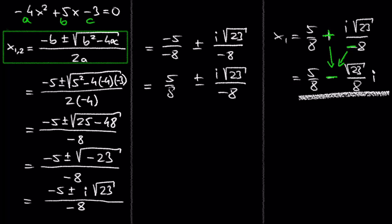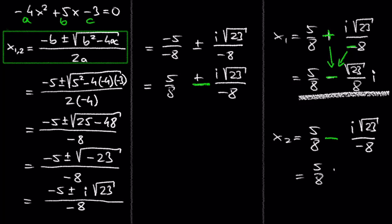And our second solution is 5 over 8 minus i times the square root of 23 over negative 8, which we can also write as 5/8 plus (√23/8)i.